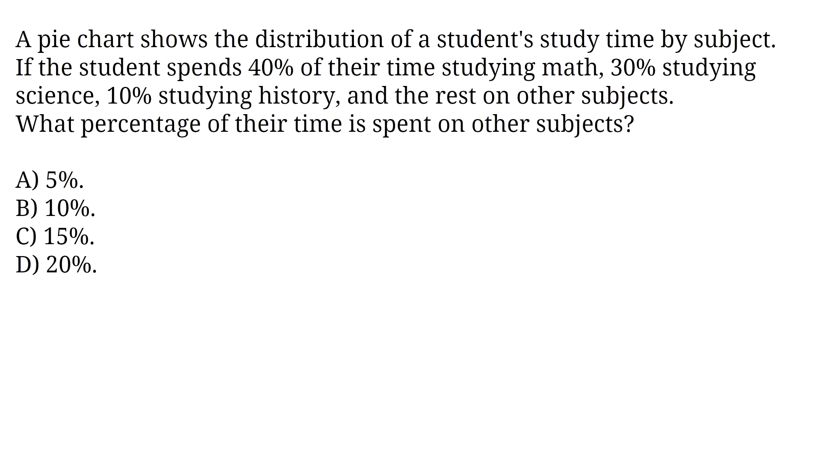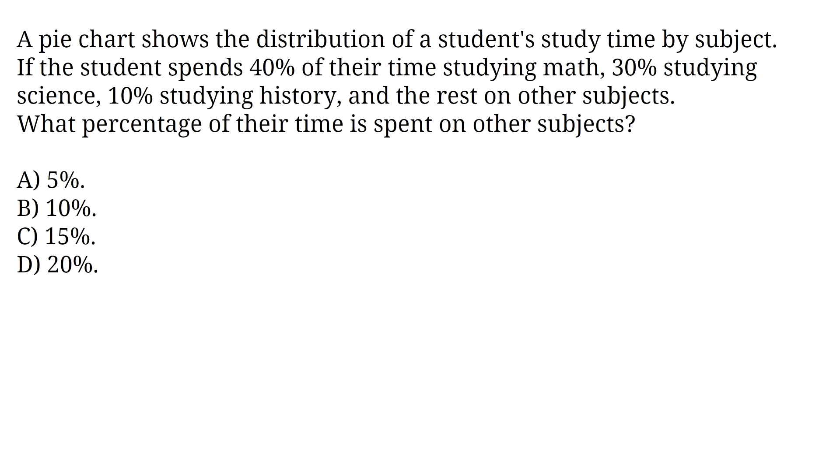A pie chart shows the distribution of a student's study time by subject. If the student spends 40% of their time studying math, 30% studying science, 10% studying history, and the rest on other subjects, what percentage of their time is spent on other subjects? A) 5%, B) 10%, C) 15%, D) 20%.